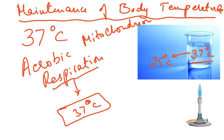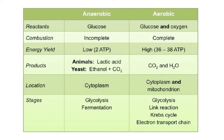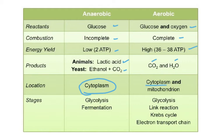Comparing aerobic and anaerobic respiration: anaerobic uses only glucose as a reactant; aerobic uses glucose and oxygen. Combustion is incomplete in anaerobic, complete in aerobic. Energy yield is 2 ATP (anaerobic) versus 36–38 ATP (aerobic). Products: lactic acid in animals, ethanol and CO₂ in yeast (anaerobic); CO₂ and water (aerobic). Location: anaerobic occurs in the cytoplasm; aerobic in the cytoplasm and mitochondria.